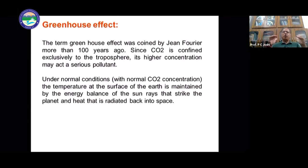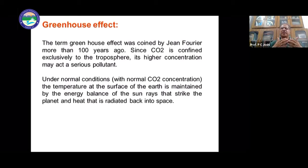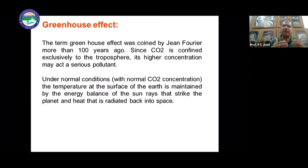Greenhouse gases — which include methane, carbon monoxide, carbon dioxide, water vapor, and sulfur dioxide — have made an umbrella over our atmosphere. The energy from the surface that would normally go back to space is now trapped by this greenhouse blanket and is not going out.